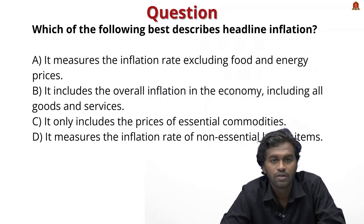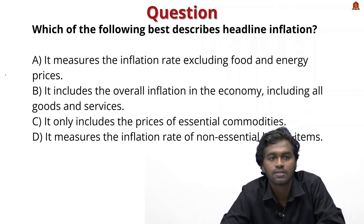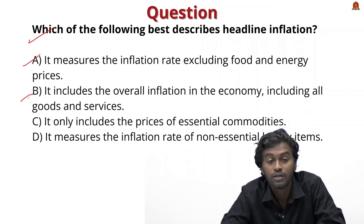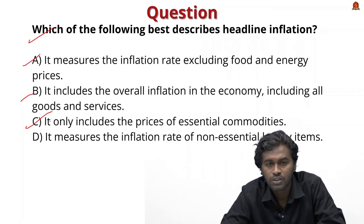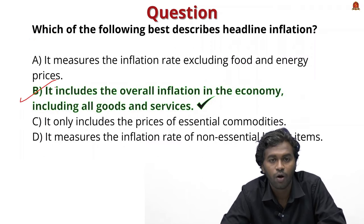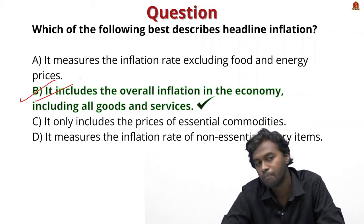Based on our discussion, try to answer this prelims question: 'Which of the following best describes headline inflation?' Option A: It measures inflation excluding food and energy. Option B: It includes overall inflation in the economy including all goods and services. Option C: It only includes prices of essential commodities. Option D: It measures inflation of non-essential luxury items. The answer is Option B — because headline inflation includes all goods and services to show how inflation impacts retail consumers.